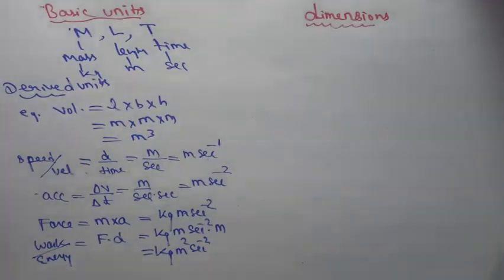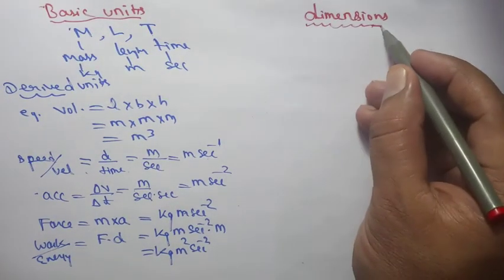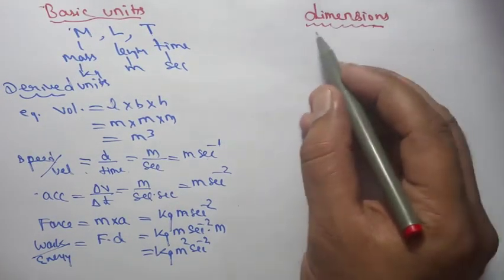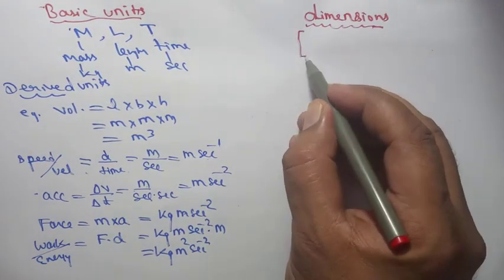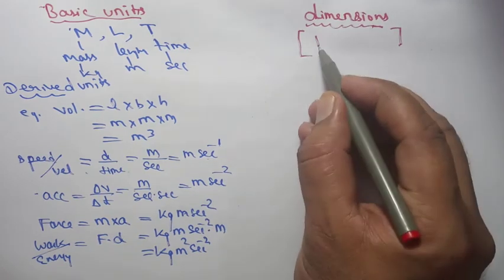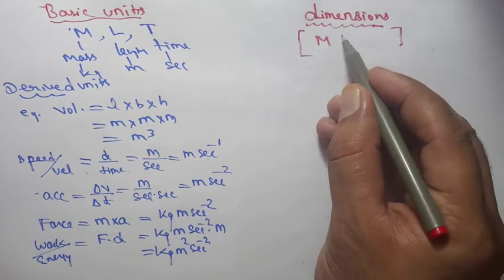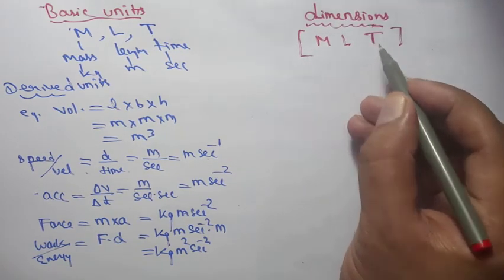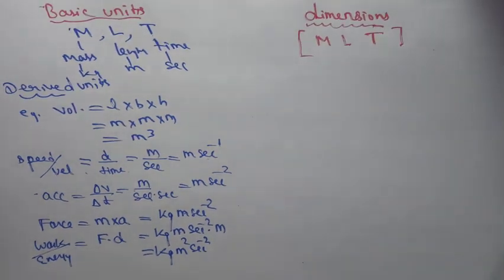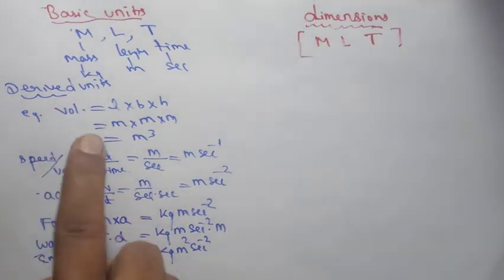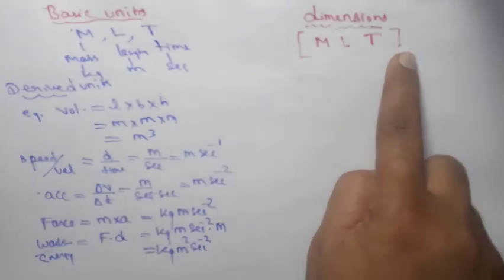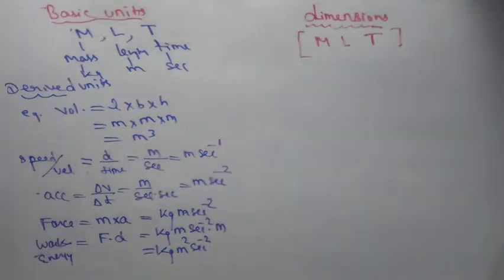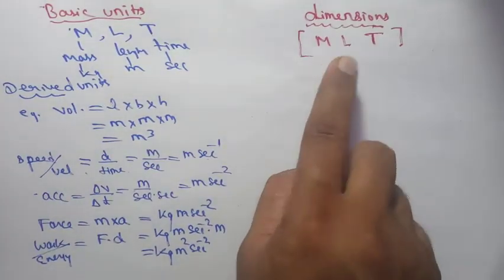How do we find dimensions? The symbol for dimensions is square brackets [ ]. Inside we write M for mass, L for length, T for time. The other seven fundamental units also appear here but rarely — let us understand with these for now.